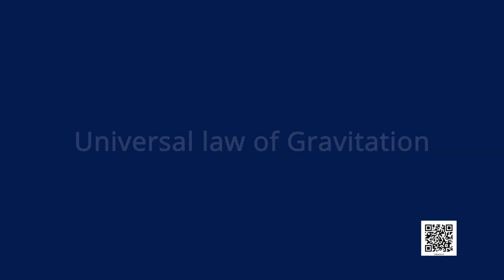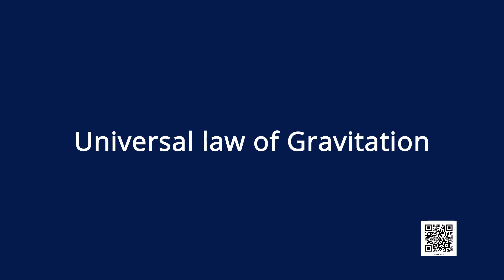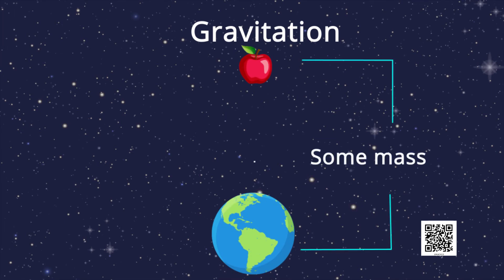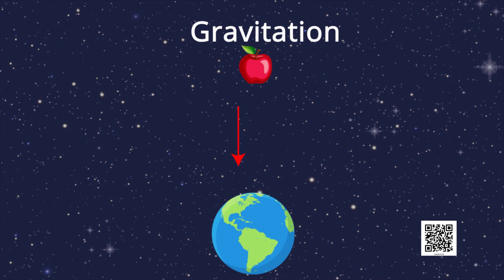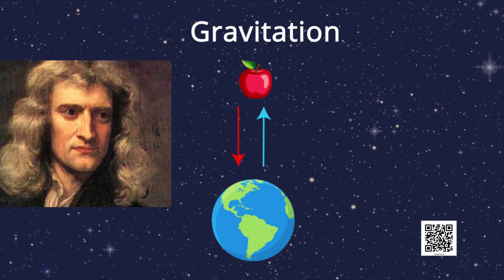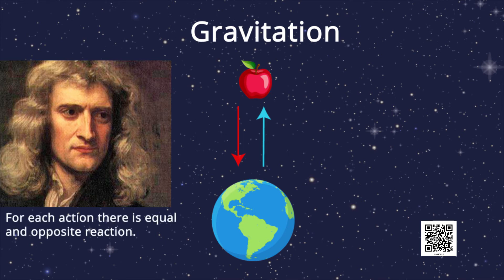Now let us learn the universal law of gravitation. Gravitational force occurs between two objects which have some mass and are situated at a specific distance from each other. It is seen that a falling apple is attracted towards the earth. Does the apple attract the earth? It is clear that both objects exert force on each other, because according to Newton's third law of motion, for every action there is an equal and opposite reaction. So the apple also applies an equal force on the earth.